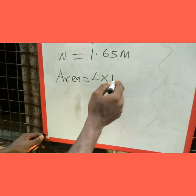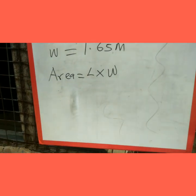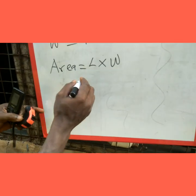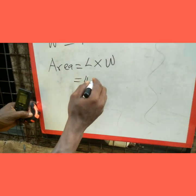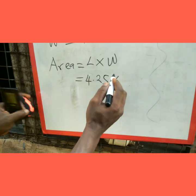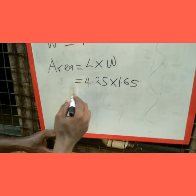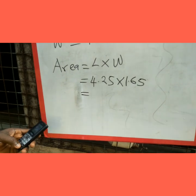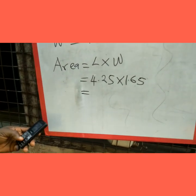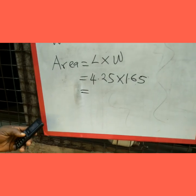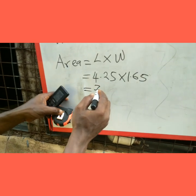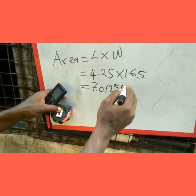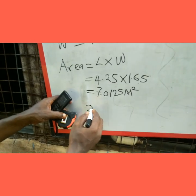Length times width gives us the area of the pond, everything in meters. So our length 4.25 times our width 1.65 — that is 4.25 × 1.65 — our area will be 7.0125 square meters, which is approximately 7 square meters. This is the area of our pond.